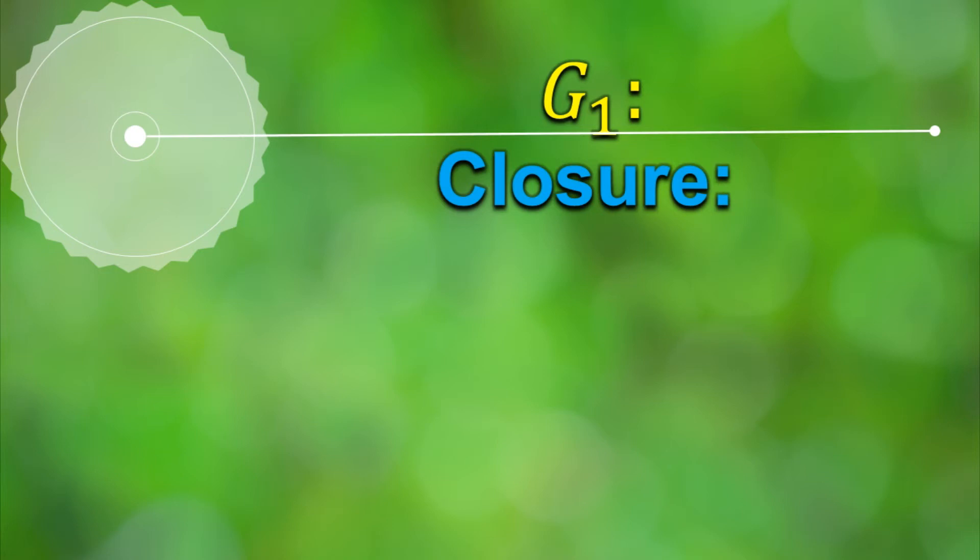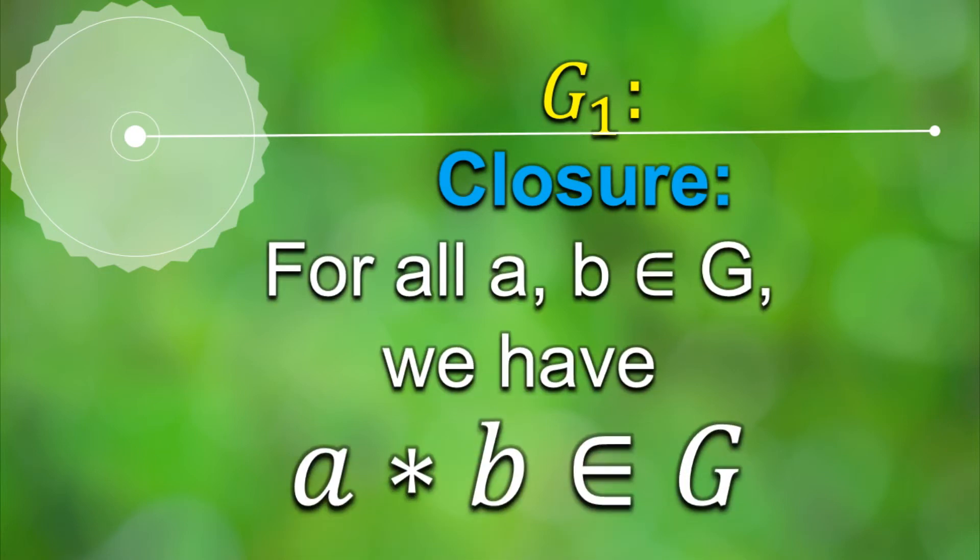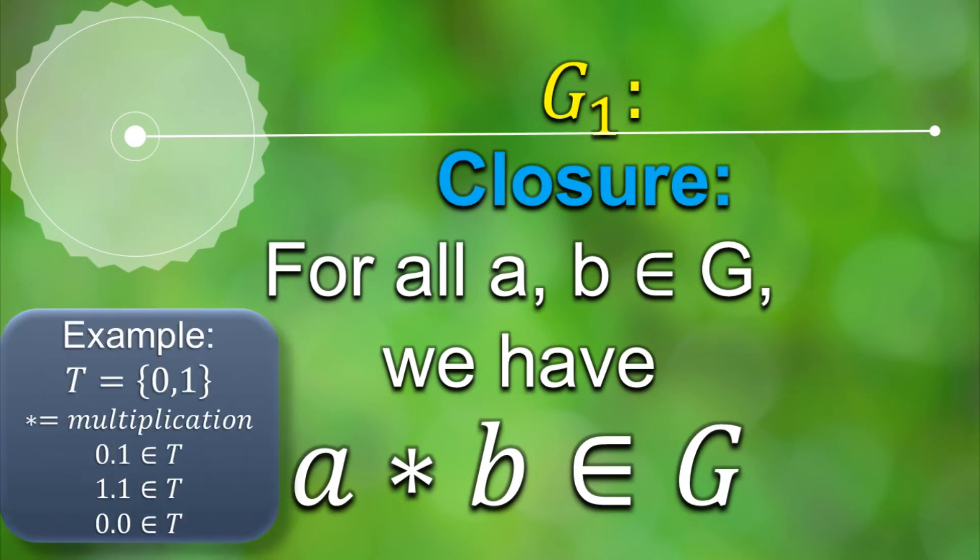First and foremost a set needs to be closed under the binary operation star which means when star is applied on any two elements of the set G the result must belong to the set G and this has to be true for all the elements of the set G.